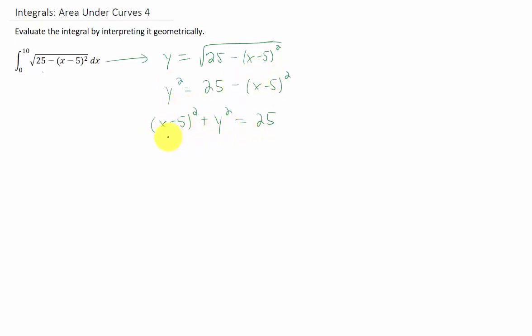And what this represents is a circle with a radius of five, but it's shifted to the right five units. Or in other words, its center is the point five zero.